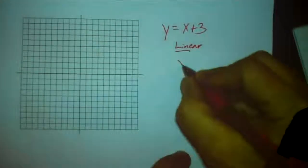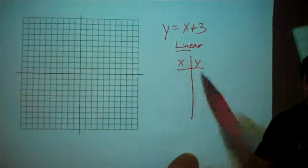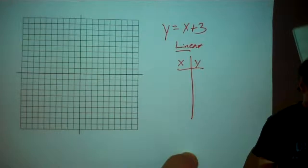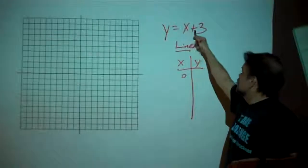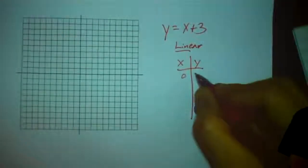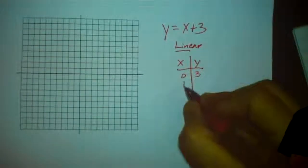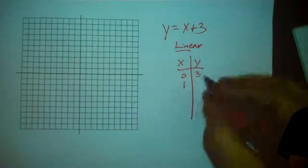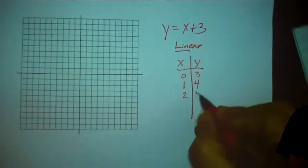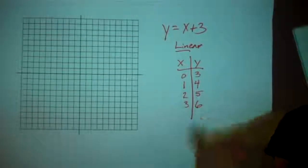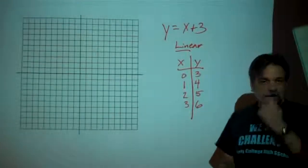I'm going to make a little table here with my x-coordinate and my y-coordinate. If x were 0, then 0 plus 3 would be 3. If x were 1, then 1 plus 3 is going to be 4. If x were 2, then 2 plus 3 is going to be 5. And if x were 3, then 3 plus 3 is going to be 6. You see the pattern — each time as I step up 1 for the x, I'm going to step up 1 for the y as well.